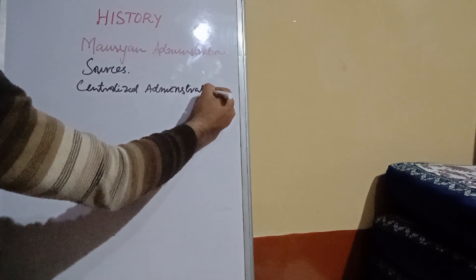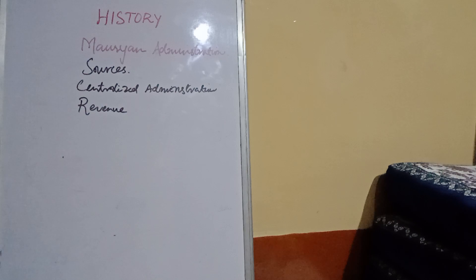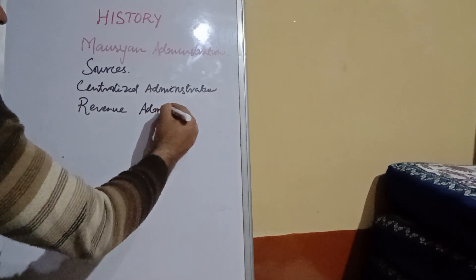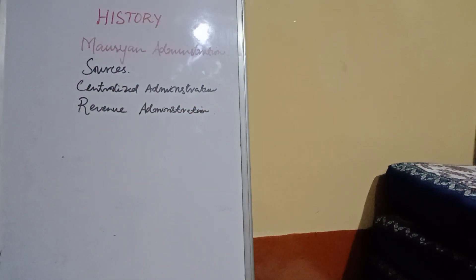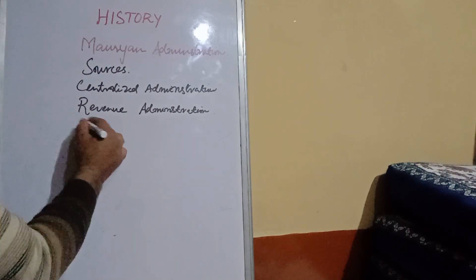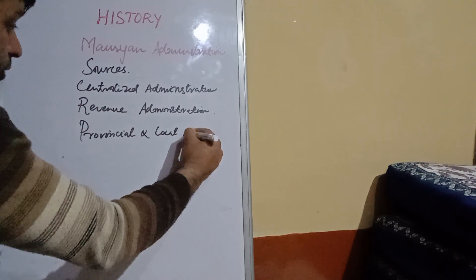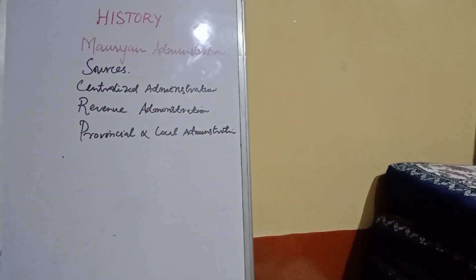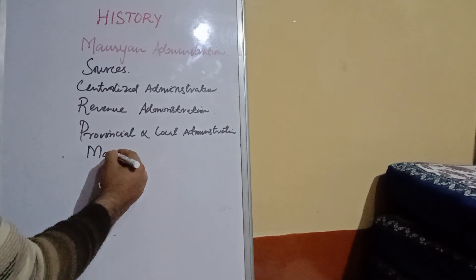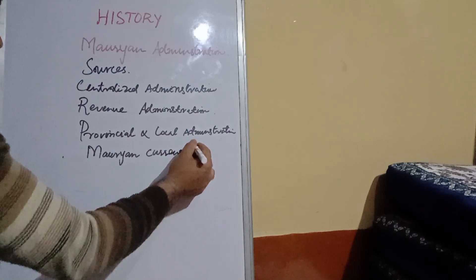Number three would be revenue administration — that is, how and when they used to get revenue from people. Number four would be provincial and local administration. And last but not least would be Mauryan currency.